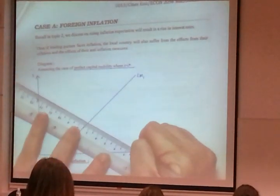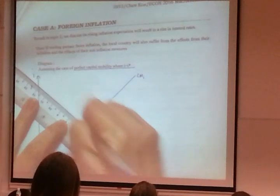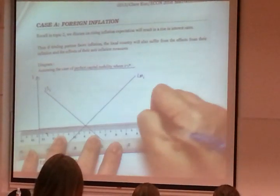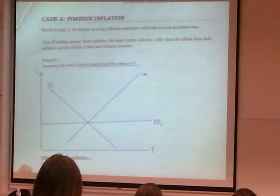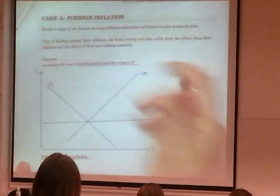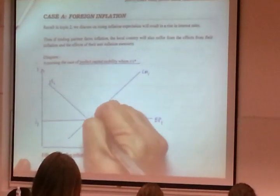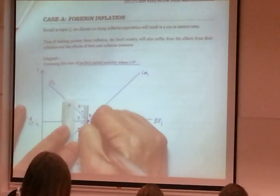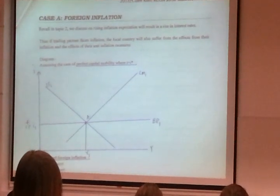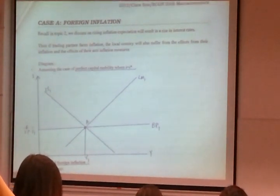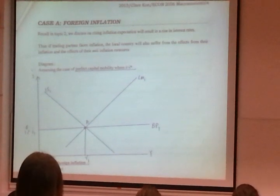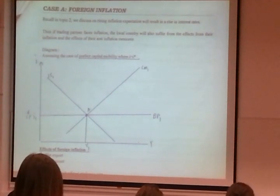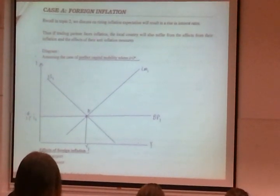One thing I'd like you to do, try to draw your IS a little bit to your left, because I want the initial interest rate to be a bit lower. But if you didn't do so, it's fine. As long as you have enough space on top. Start at point A, we're doing horizontal BP, that's why we need to compare with foreign countries.